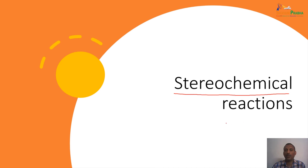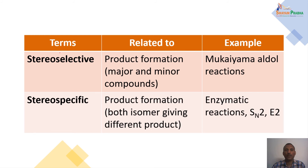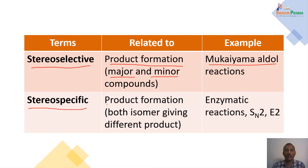Let us now look at stereochemical reactions — a brief introduction. There are two major types: stereoselective reactions and stereospecific reactions. In the stereoselective case, a major and minor product are formed. An example is the Mukaiyama aldol condensation. In a stereospecific reaction, two different stereoisomeric starting materials give different types of products. Examples include enzymatic reactions, SN2 reactions, and E2 reactions.